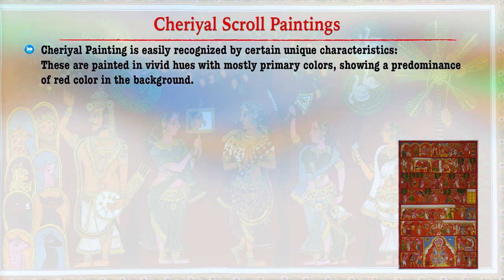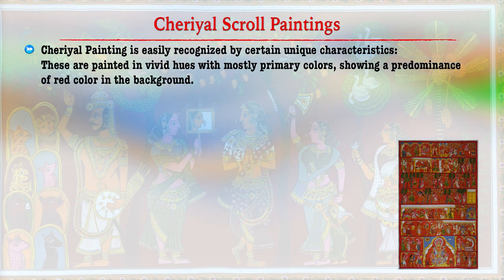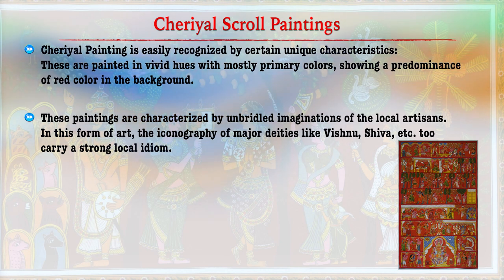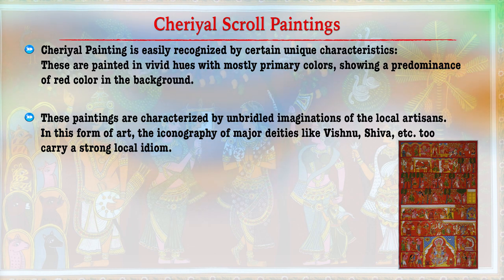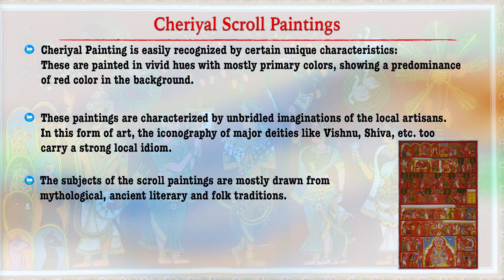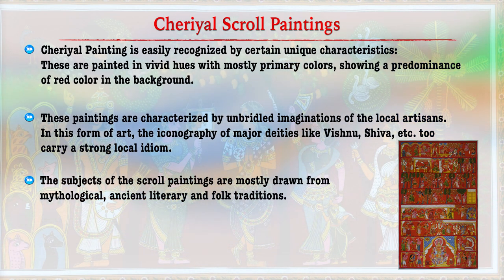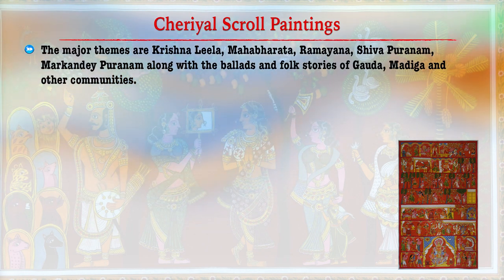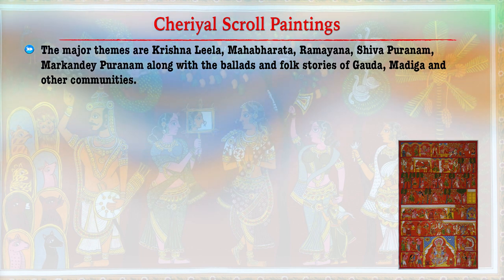The Cherial paintings are easily recognized by certain unique characteristics — they are painted in vivid hues with most primary colors, showing a predominance of red in the background. The paintings are characterized by the unbridled imagination of local artisans. The iconography of major deities like Vishnu and Shiva carries a strong presence. The subjects are drawn from mythological characters, ancient literary sources, and folk traditions, with themes of Krishna Leela, incidents from the Shiva Purana, Markandeyapurana, and folk stories of Garuda and other local areas.